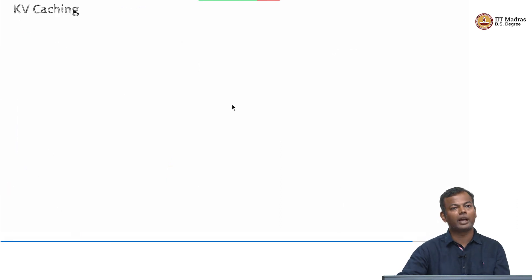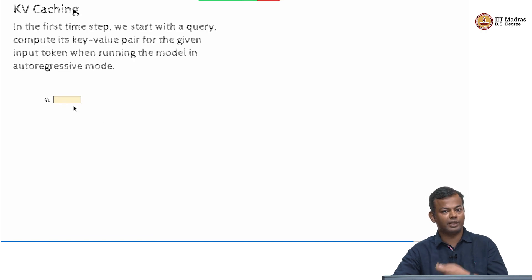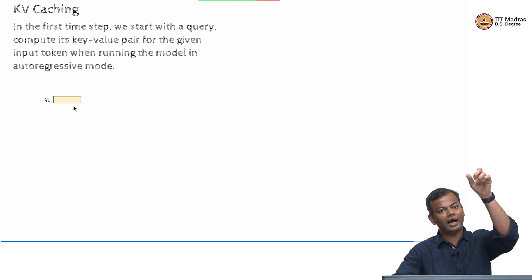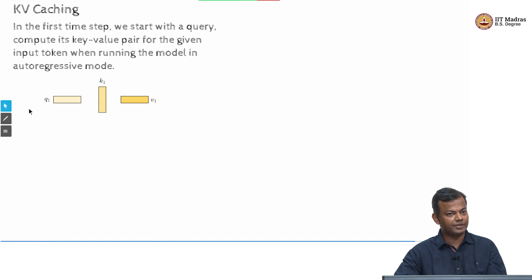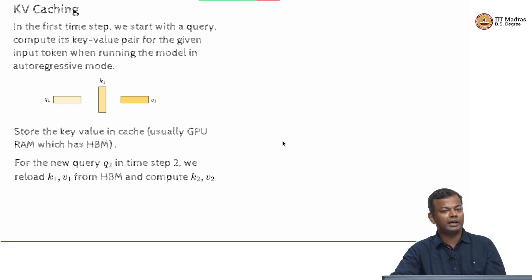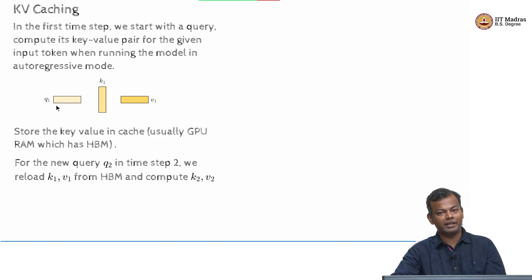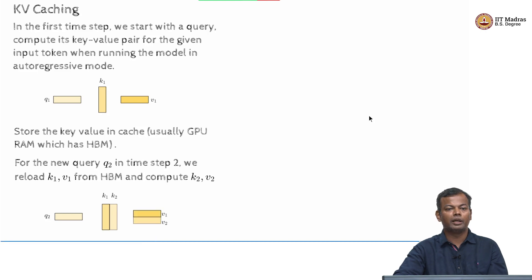The simple idea is to just cache. Can you cache all the KV values? In the first time step, we start with a query Q1 - the query vector needs to be computed because that is the one being fed. At time step 0, you computed start's Q, K and V - all three have been computed. So store the key and value in the cache. You can do this in the GPU RAM, which is high bandwidth memory (HBM). For the new query Q2 in time step 2, we reload K1, V1 from high bandwidth memory and compute only K2, V2. We do not need to compute K1 and V1 again.